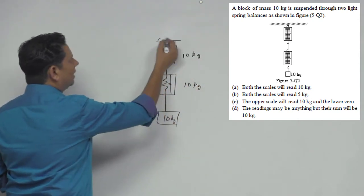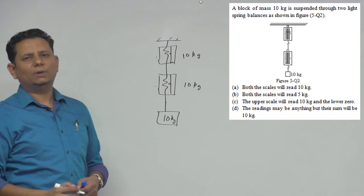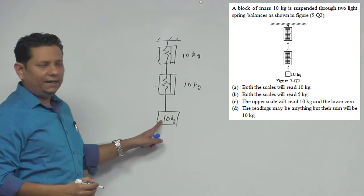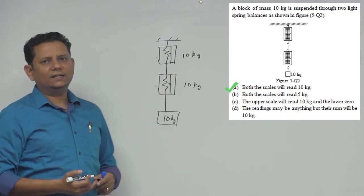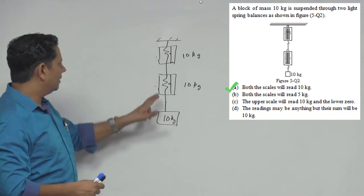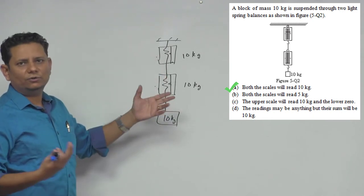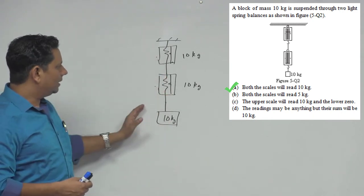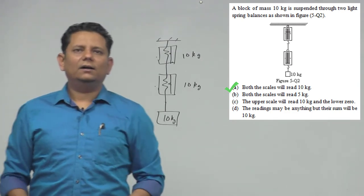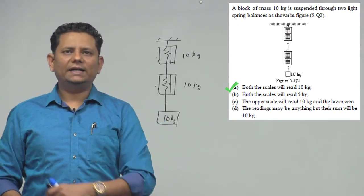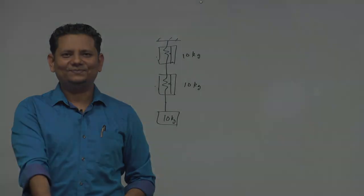And this is under the assumption that the mass of both spring balances we are taking as 0. So if there is 10 kg here, then both will read 10 kg, 10 kg. If the mass of both gets added then the reading will of course change. But if we assume these are massless, then option number A, that both scales will read 10 kg.